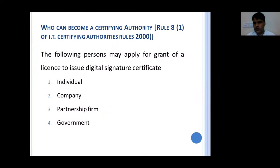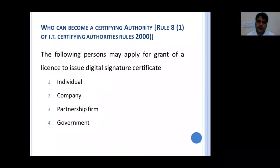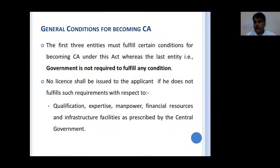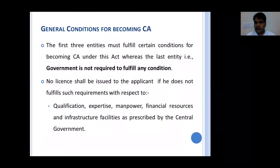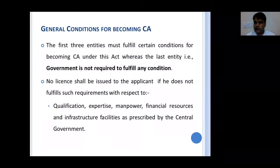For the government, if there is a subordinate agency, then that can also be a certifying authority. There are certain general conditions for becoming a certifying authority, whether it is an individual, a company, or a partnership firm — there are certain general conditions that everyone must fulfill.